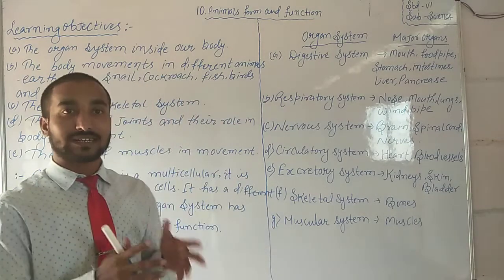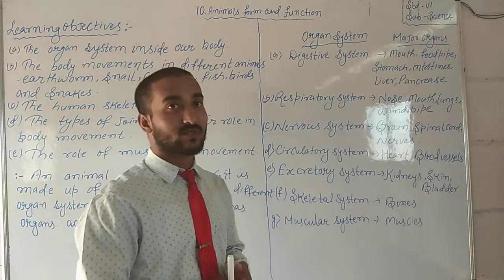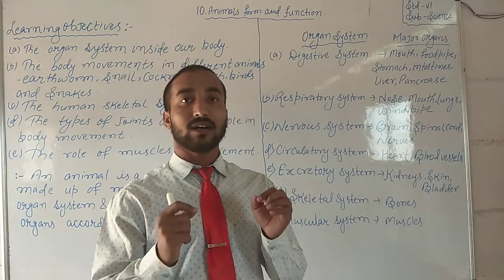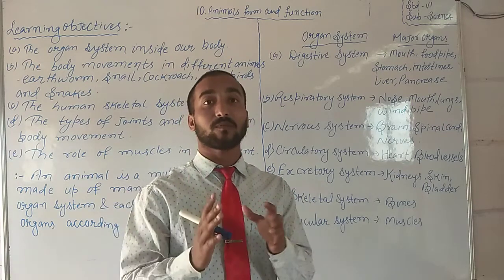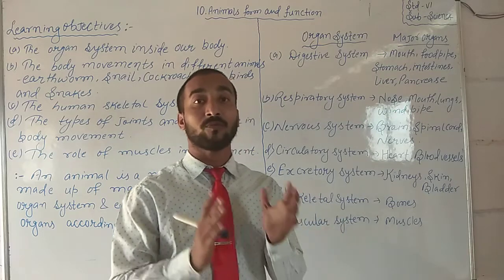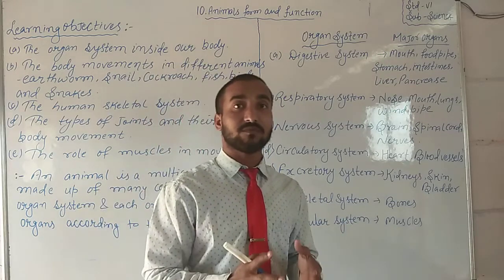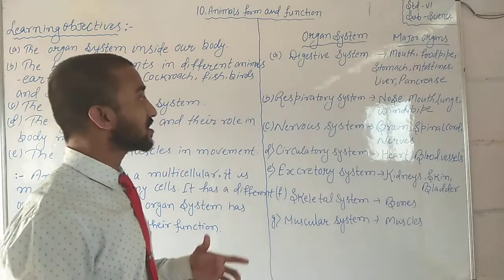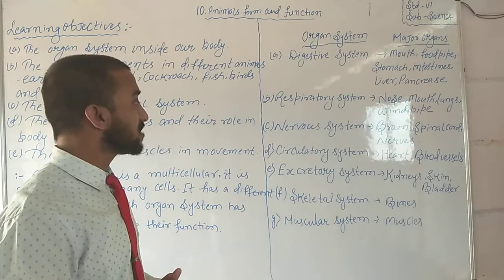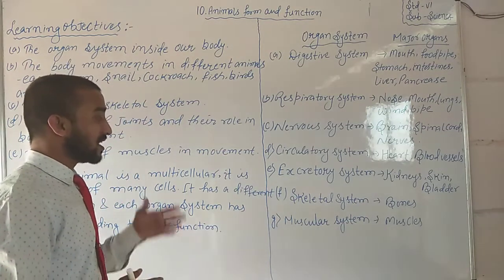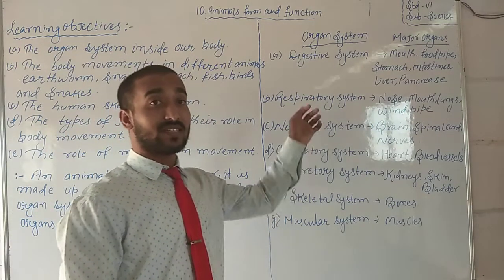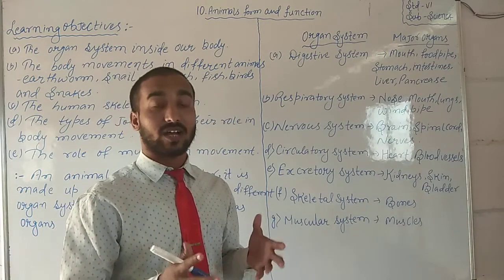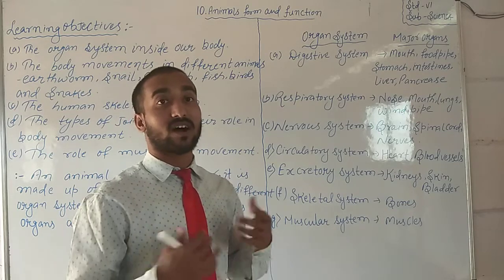Each organ system has a different set of proper organs for its functioning. Our body works with the help of all seven organ systems. The seven organ systems inside the body are: number one, the digestive system; number two, the respiratory system; number three, the nervous system; number four, the circulatory system; number five, the excretory system; and the last, the muscular system. These seven organ systems together form the body, and that is why humans and animals are surviving.